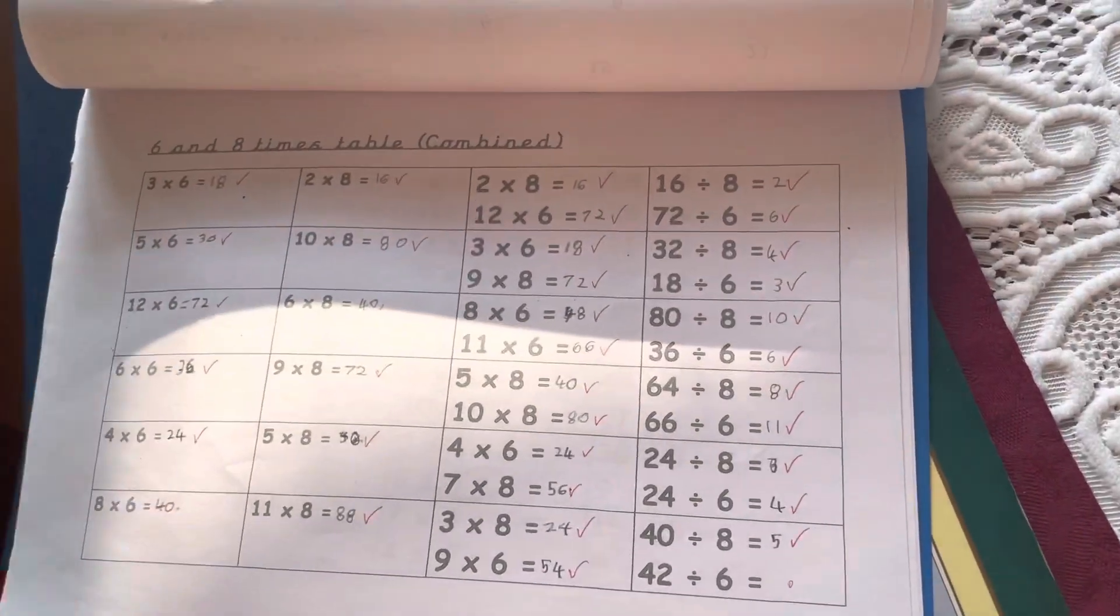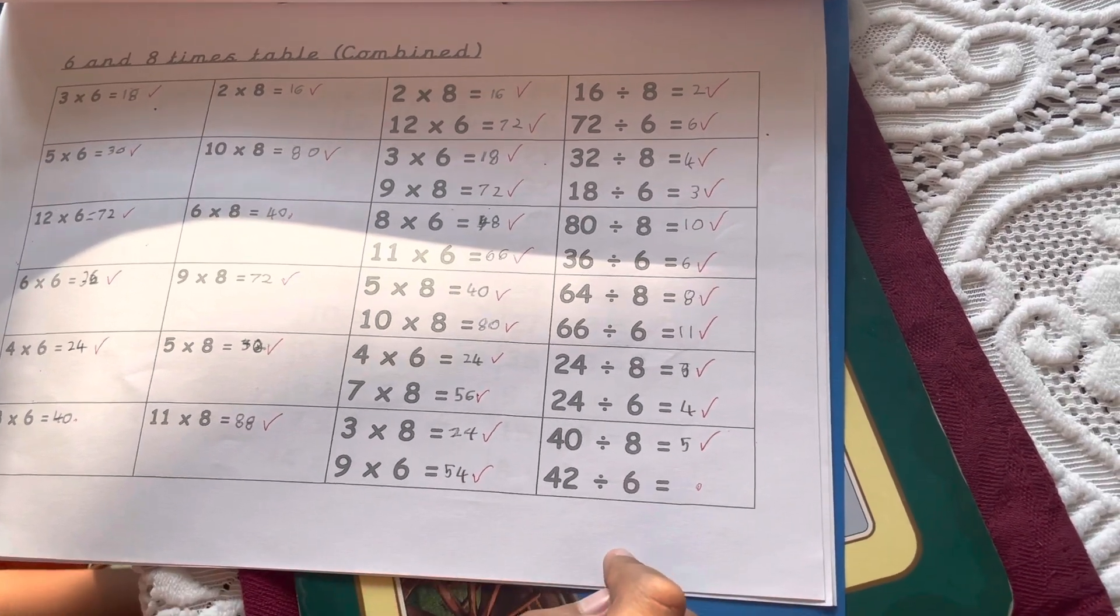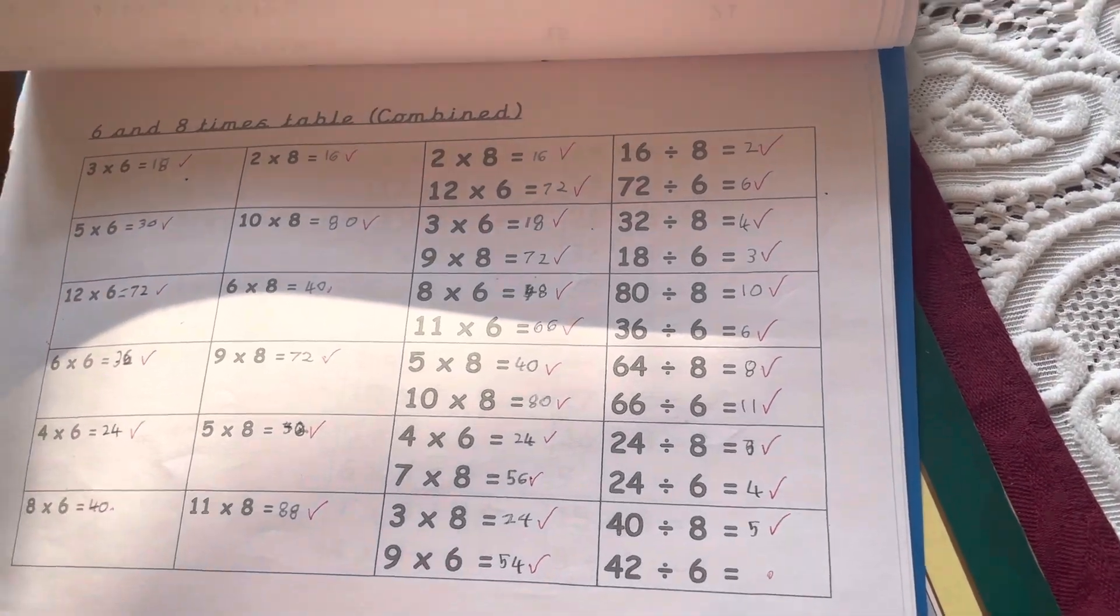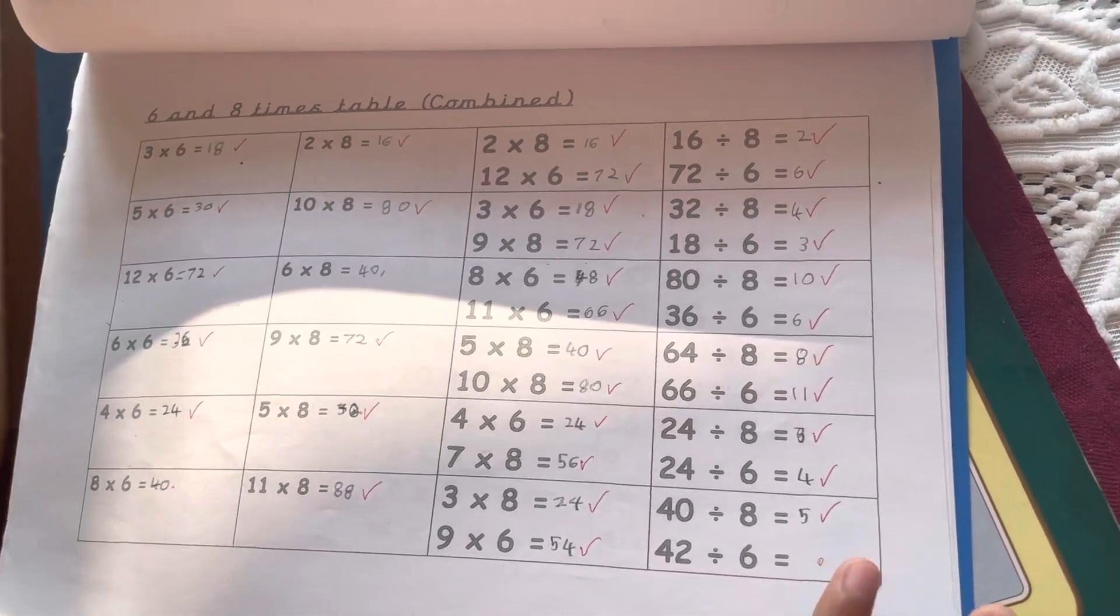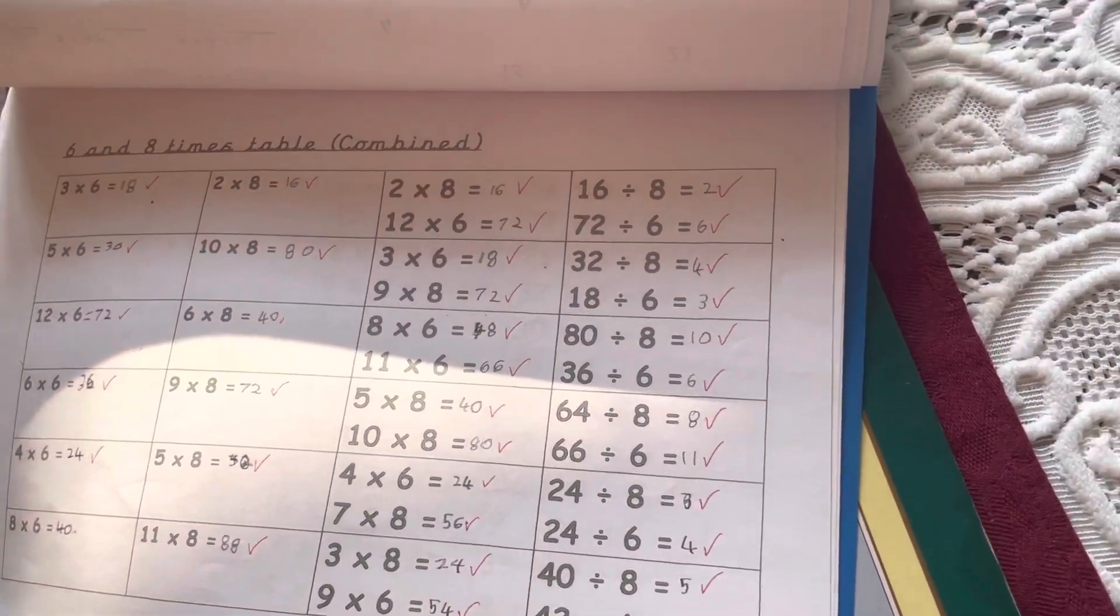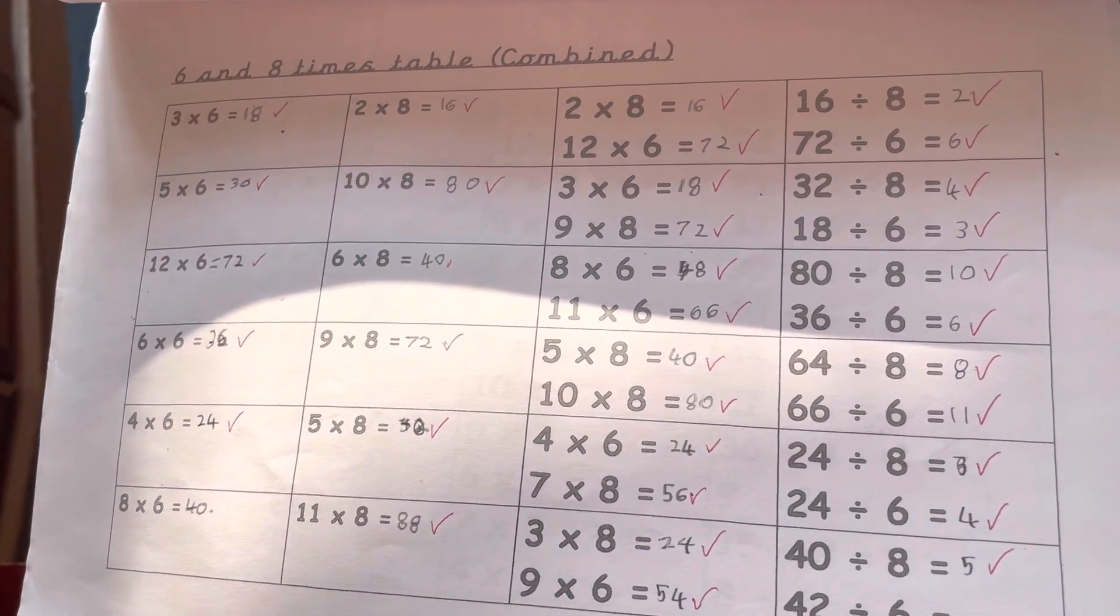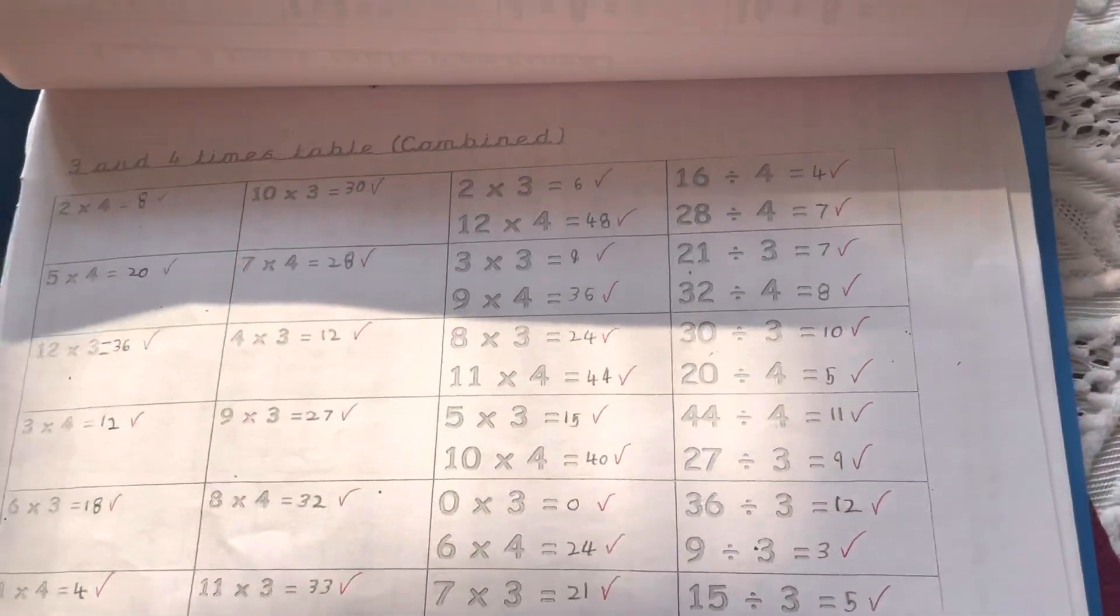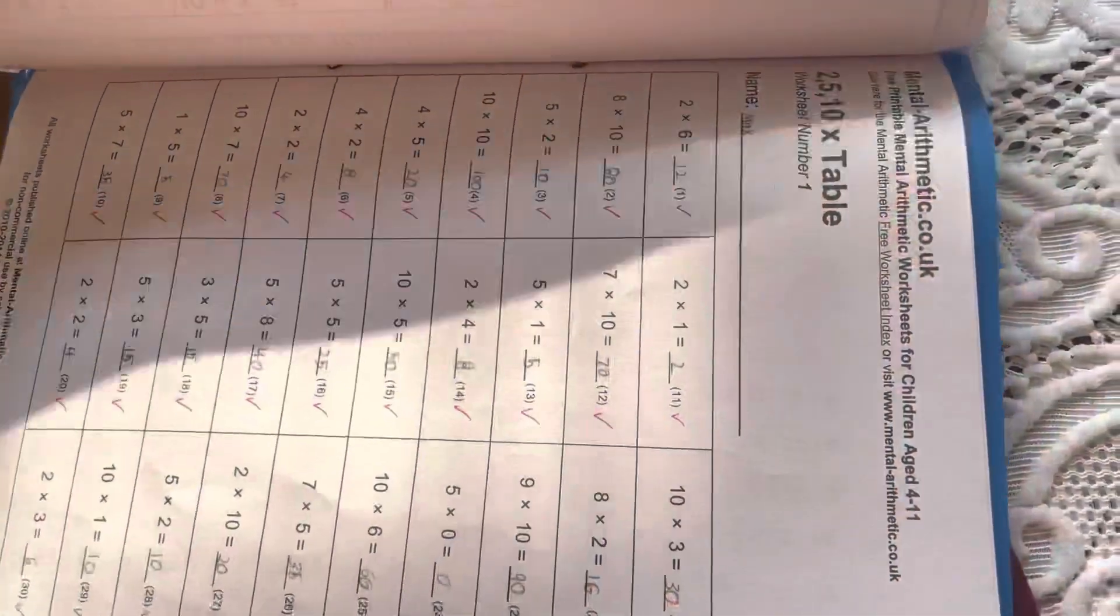And here, I only got 42 divided by 6 wrong, because I didn't do it. Oh, 42 divided by 6. It's seven. It's seven? Yeah, it is. So, comment, guys, if it is seven. Yeah, but it is seven. But I didn't write an answer, so. Oh, I got this wrong as well. 6 times 8 equals 40, I said. But it's actually 48. Oh yeah, you're in a rush. No, I wasn't in a rush, I know that, but I didn't know that then. So. And all correct here.